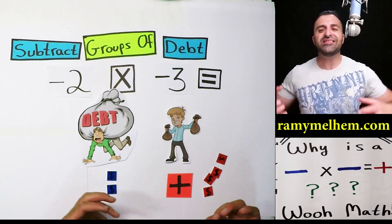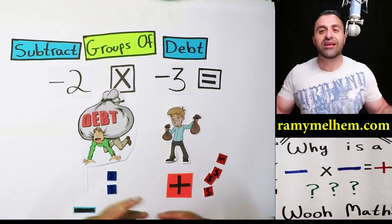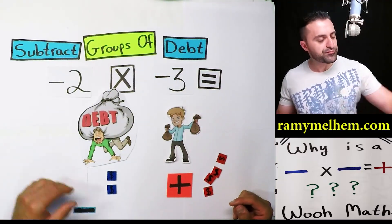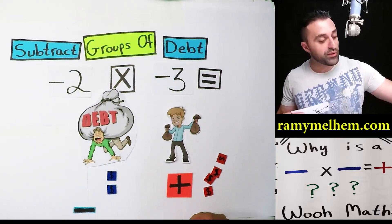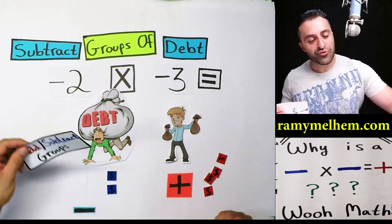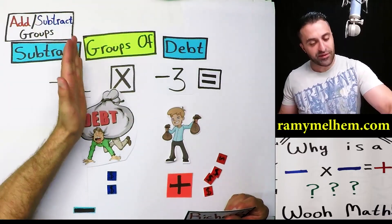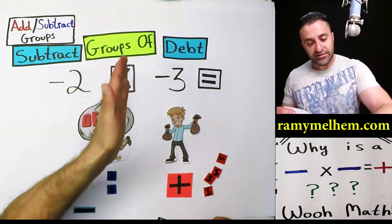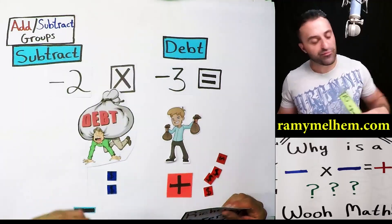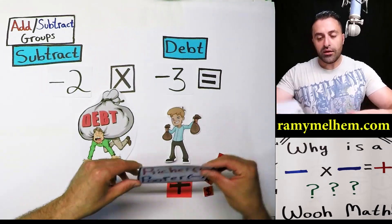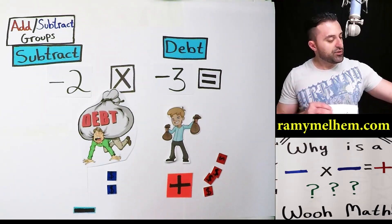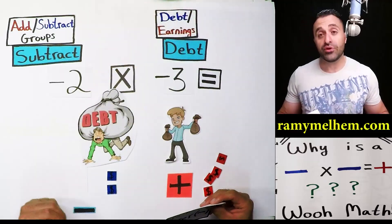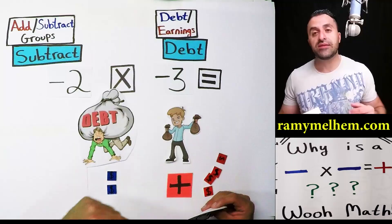He's going to feel great — he's going to be richer because now he doesn't have to owe as much money anymore. So let's review what we have: the first number tells us to either add or subtract groups; the second number tells us if it's debt or earnings — if it's positive, it's earnings; if it's negative, it's debt.